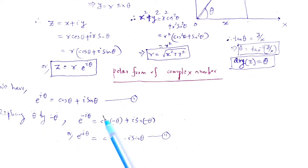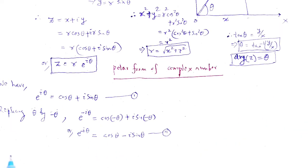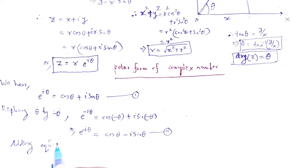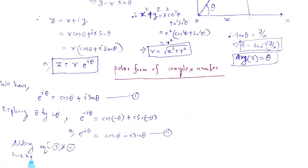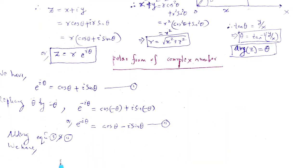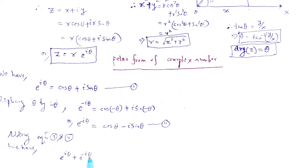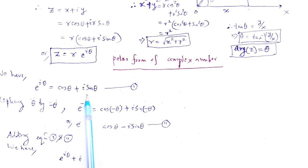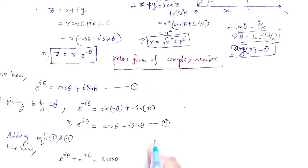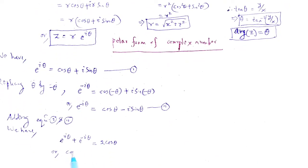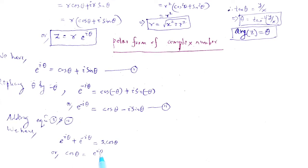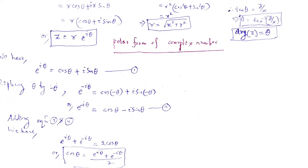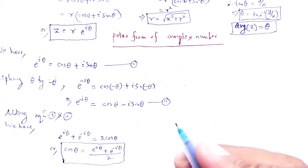Now we add and subtract these two equations. Adding equation 1 and equation 2: e to the power i theta plus e to the power minus i theta equals 2 cos theta. Therefore cos theta equals e to the power i theta plus e to the power minus i theta, all divided by 2. That gives cos theta in terms of e to the power i theta.